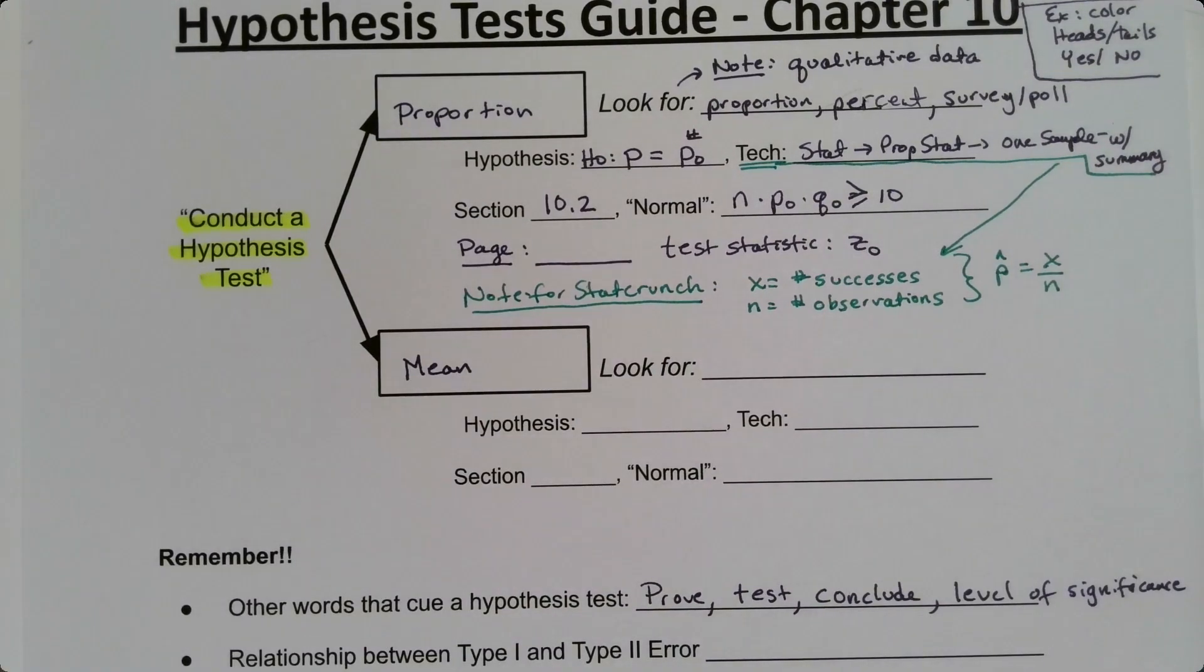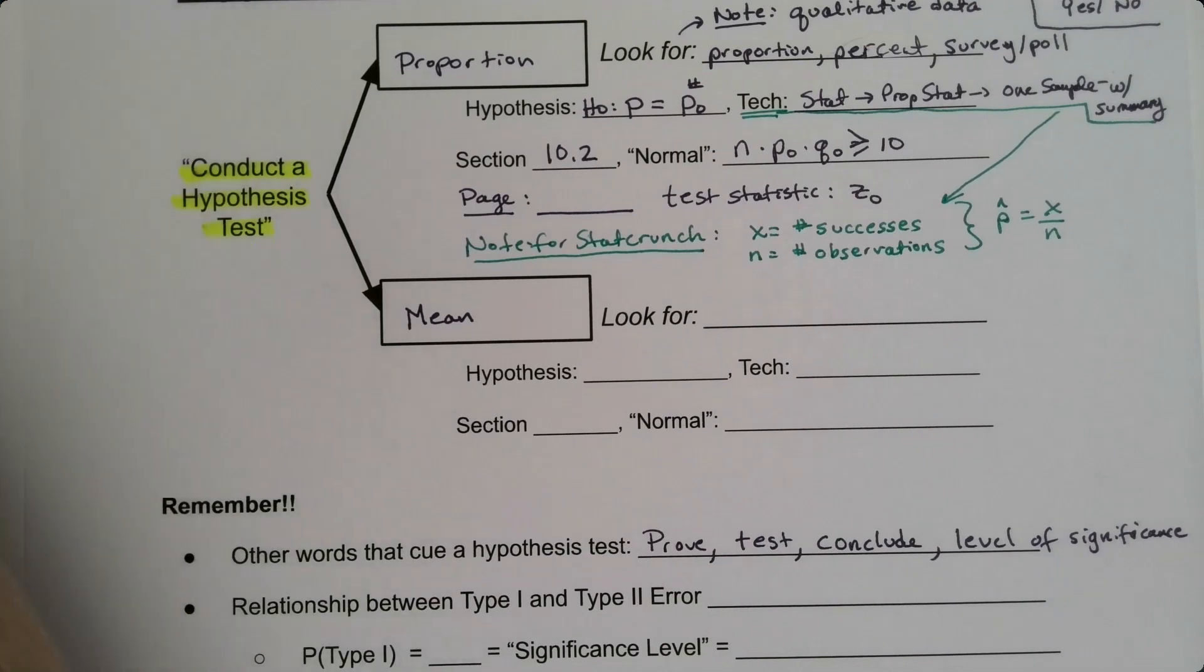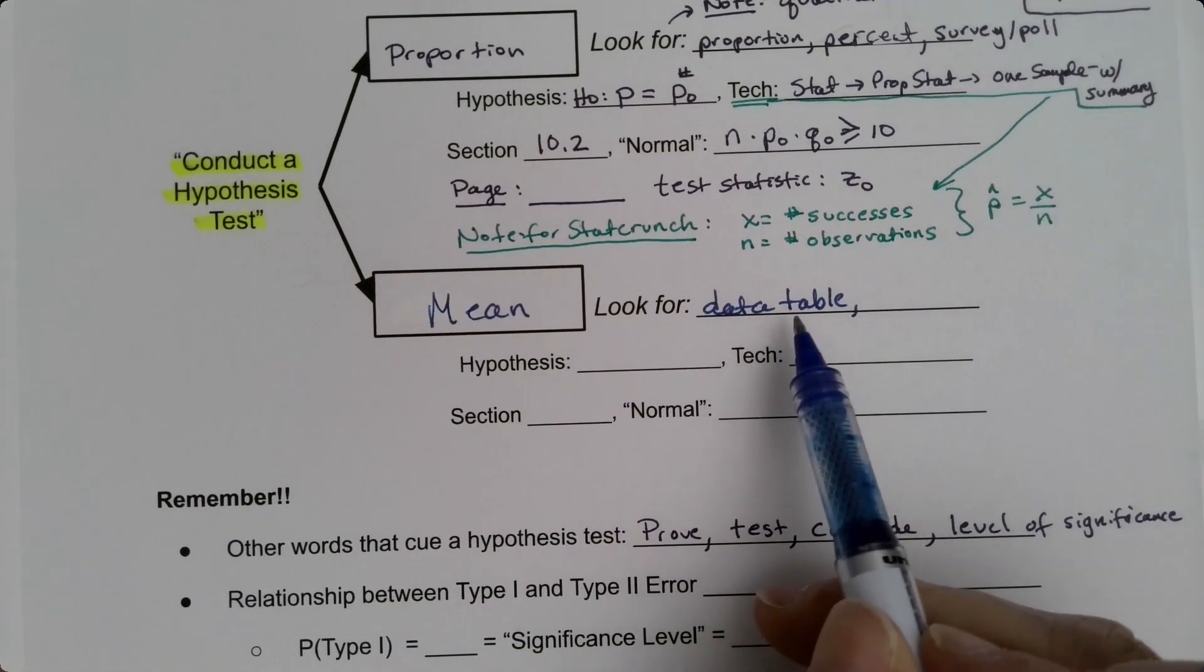Now what about the mean? Well, the mean's a little bit easier to figure out. You'll see a data table. If you see a data table in the problem, that's means. So a lot of times you'll have an actual data table.